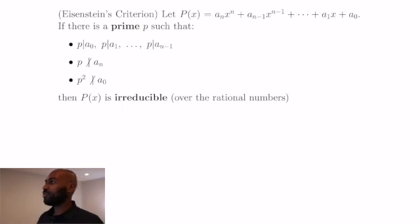So let's say you're given a polynomial like this whose coefficients are integers. Eisenstein's criterion says the following. If you have a prime p that divides all of the coefficients except for the leading coefficient, and also that the square of that prime doesn't divide the constant coefficient of your polynomial, then there's no way your polynomial factors as a product of polynomials with integer coefficients.